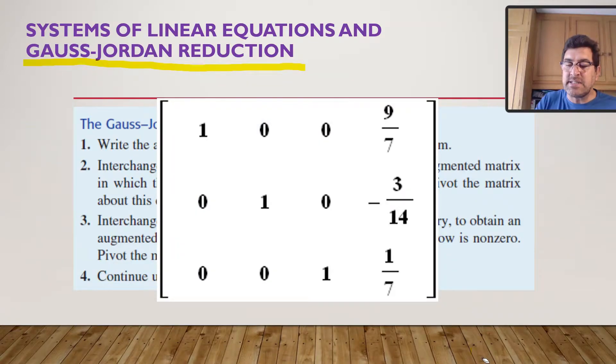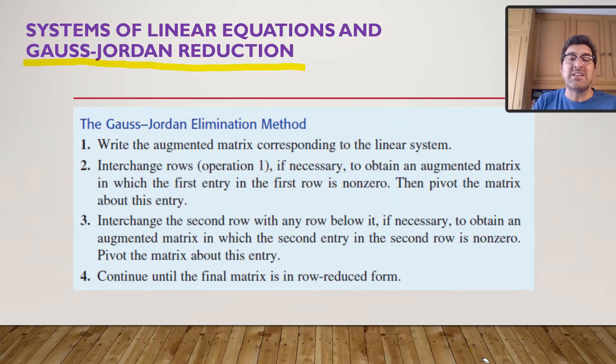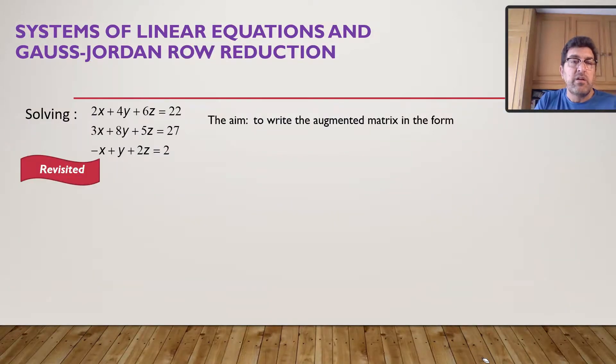So that is exactly what it means to have it in a row-reduced form. You have the identity matrix in the first three columns, or first three rows, and then the constants in column number 4.